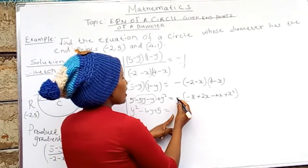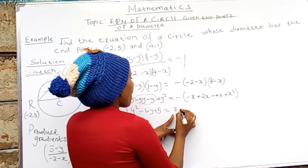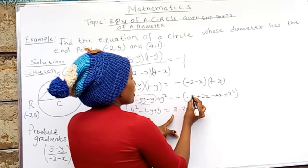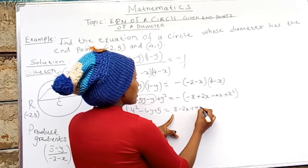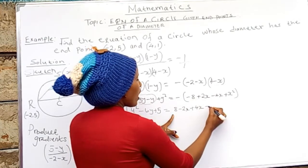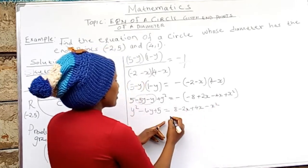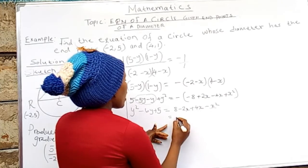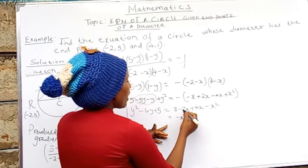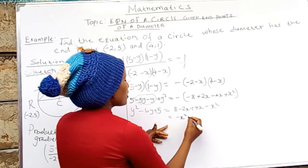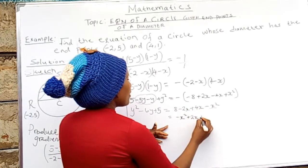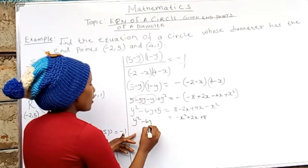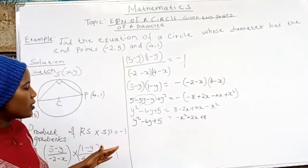This one we shall have negative times -8, we shall have 8. Then negative times positive, we shall have -2x. Negative times negative, we shall have +4x. Negative times positive, we shall have -x². We shall have -2x + 4x, this one will be +2x, and then +8. Then we have y² - 6y + 5. As simple as that.